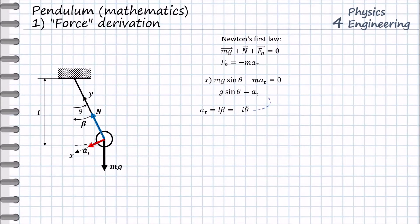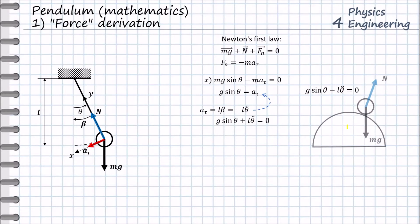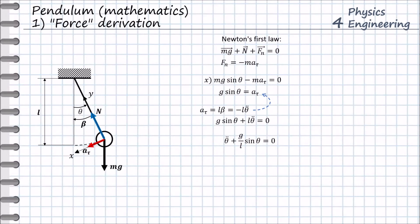Therefore the pendulum will always try to move toward its mechanical equilibrium. Substituting the angular acceleration gives the following equation. If the angular acceleration had the same sign as the second derivative of the angular position theta, it would describe a different mechanical system — a ball rolling down over a sphere — where an increase in angular position leads to an increase in angular acceleration, giving the ball an exponential dependency in angular position over time.